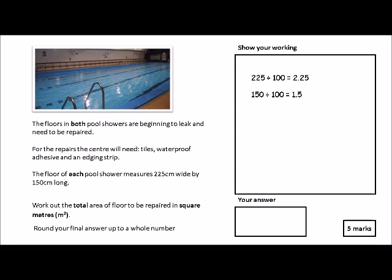The next step is to calculate the area of one pool shower. Area is length times width. The floor measures 225 cm wide by 150 cm long — but we've already converted, so it's 1.5 times 2.25. You get a mark for knowing it's length times width, and another mark for the answer: 3.375 meters squared. Don't worry — you will have a calculator in this exam.